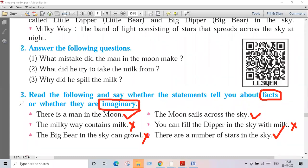So that's the answer to question number three. And question number two: What mistake did he make? What did he try to take the milk from? And why did he spill the milk?